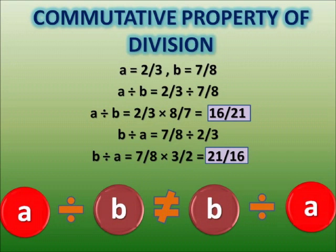Therefore we say that a divided by b is not equals to b divided by a. Hence division is not commutative — rational numbers do not fulfill the commutative property for division.